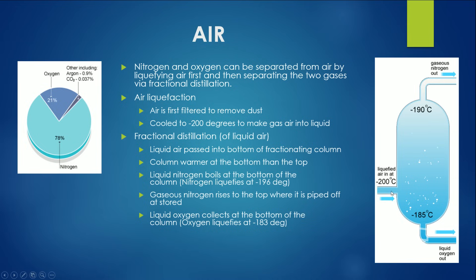Liquid air is passed into the bottom of the fractionating column. Fractional distillation utilizes the idea that the bottom part of the fractionating column is warmer than the top part. The entering temperature is around negative 200 degrees, with negative 185 at the bottom and negative 190 at the top. Because nitrogen liquefies at negative 196 degrees, the bottom at negative 185 is too hot, so liquid nitrogen boils and rises to the top where gaseous nitrogen is taken out and stored.